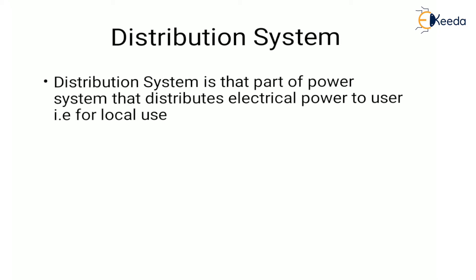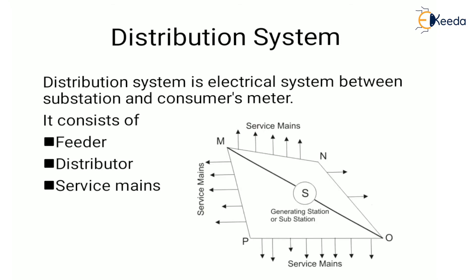The distribution system is an electrical system between a substation and the consumer meter. It consists of a feeder, distributor, and service mains. First, we will see what is a feeder — it is a conductor which connects the substation to the area where power is to be distributed.